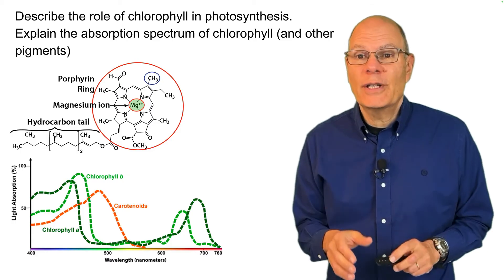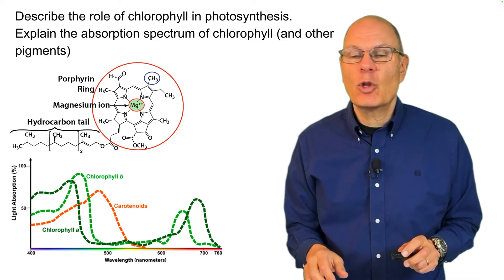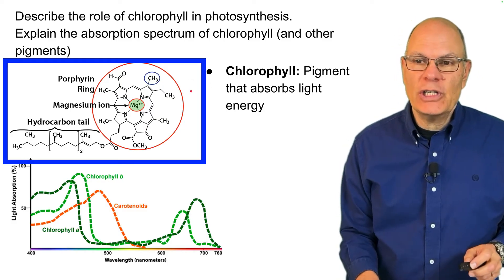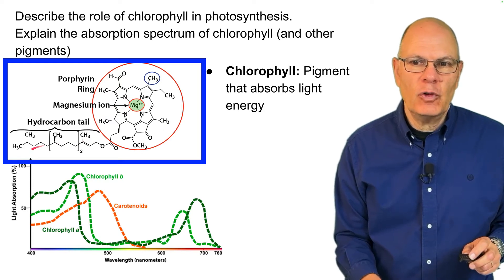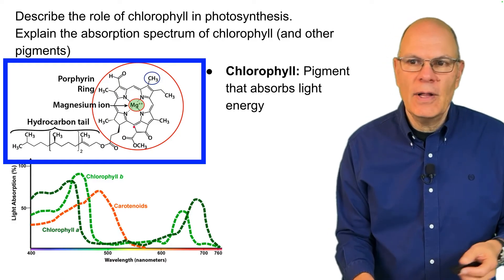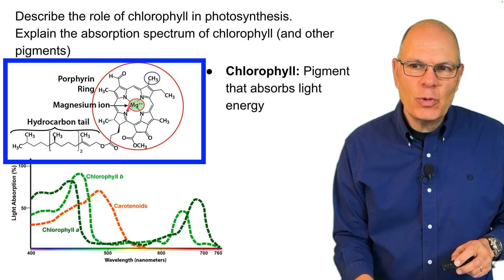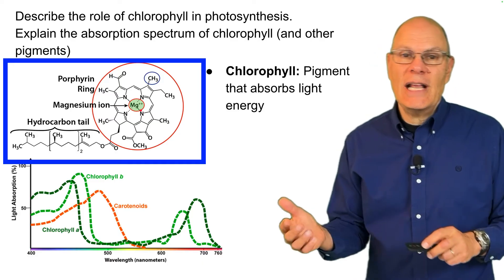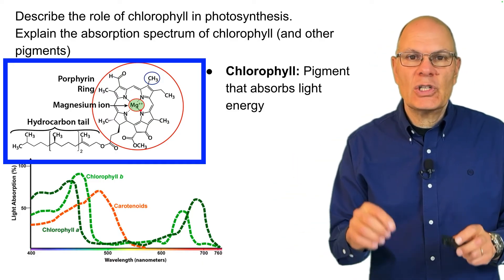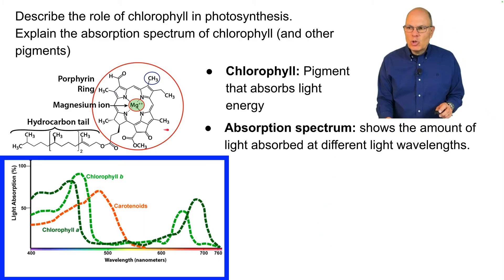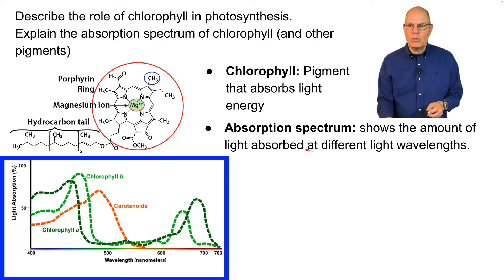Chlorophyll is the pigment that absorbs light energy in photosynthesis. Its structural formula shows a hydrocarbon tail that enables it to fit into the phospholipid bilayer of the thylakoids. It's the nitrogen ring with magnesium in the center that enables chlorophyll to help plants convert light energy into electrical energy. An absorption spectrum shows the amount of light absorbed at different wavelengths by a pigment — a substance that absorbs light energy.